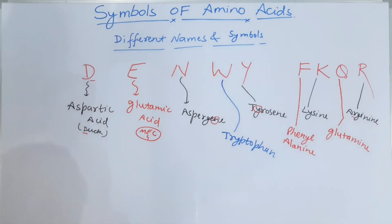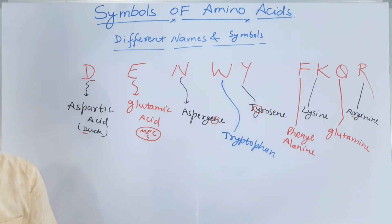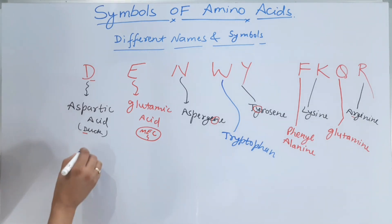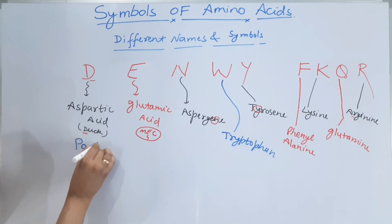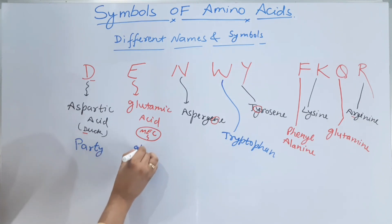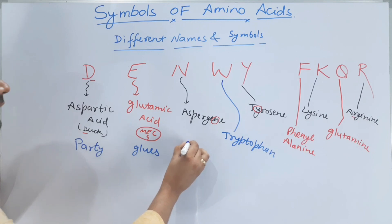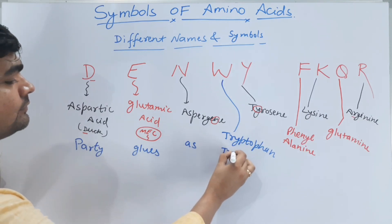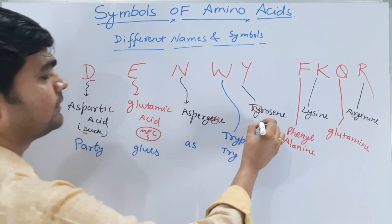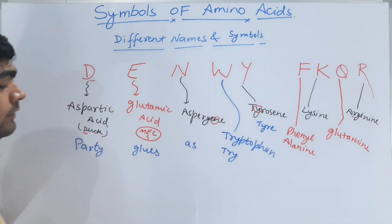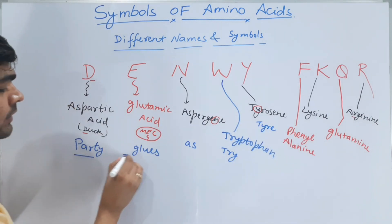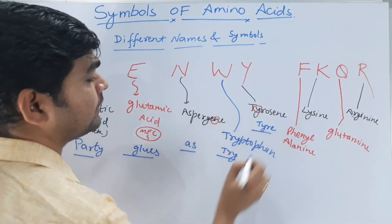I've made another trick to make it even easier to remember all the different names. The trick is: 'Party glues as tri-tier.' Party glues — as tri-tier.